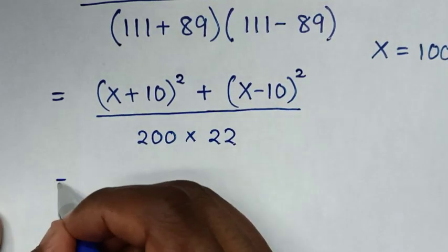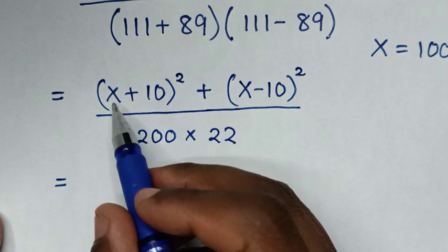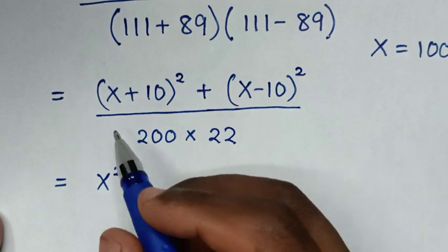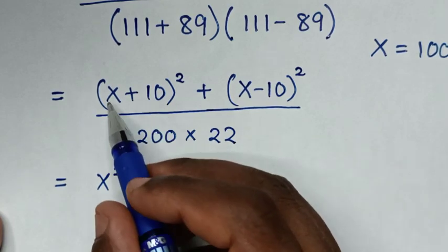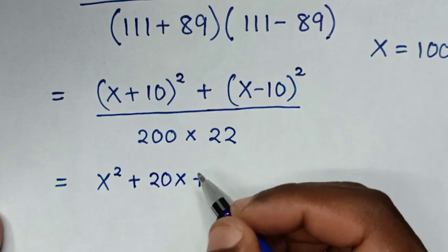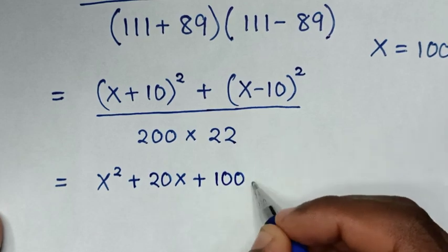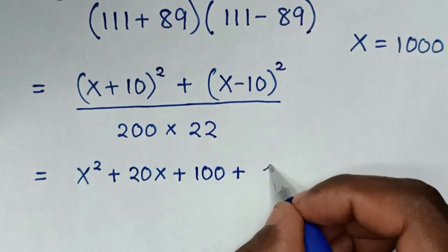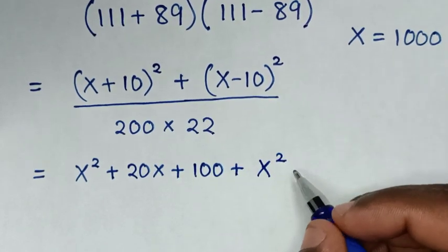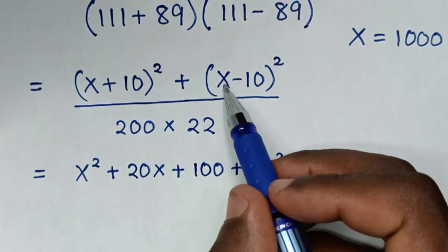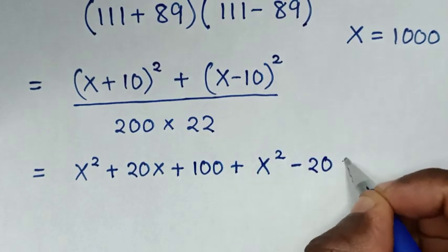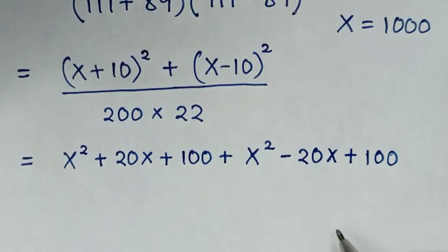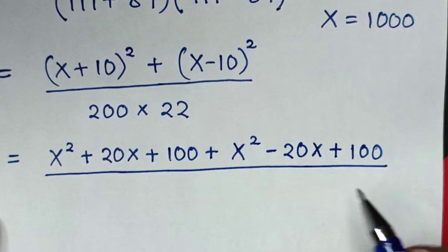Then in the next step, to expand x plus 10 bracket square: x times x is x square, then plus 2 times x times 10 is 20x, then plus 10 times 10 is 100. Then plus, expanding the second bracket similarly, this times this will be 100.